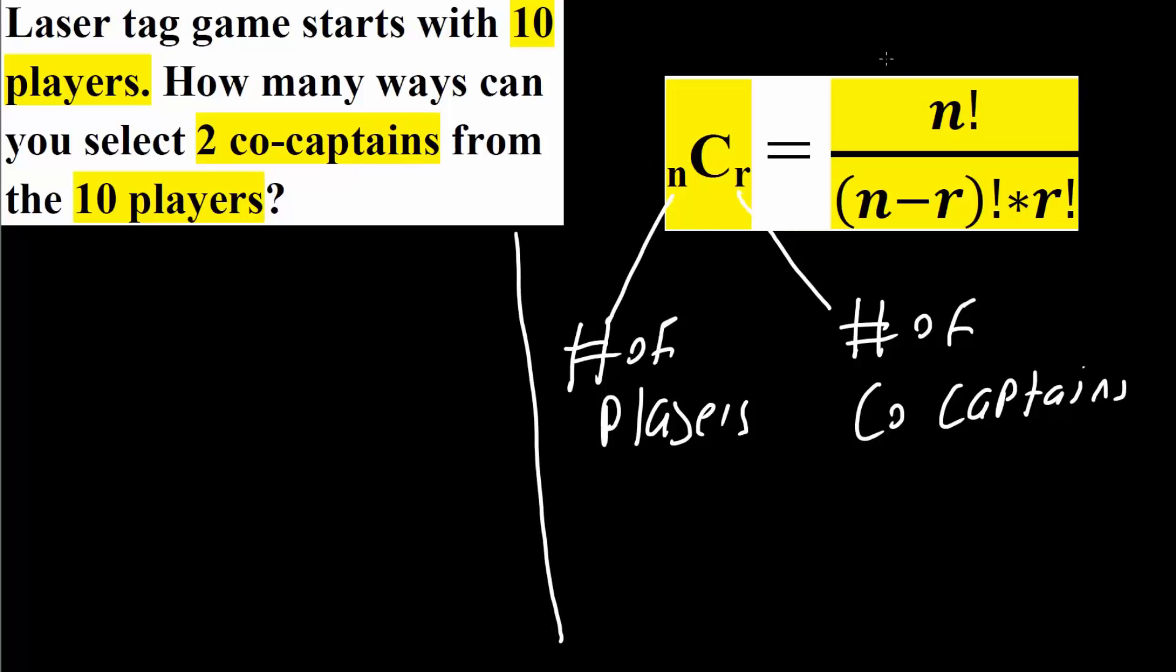So let's do that. n factorial - we're saying that we have 10 players, 10 objects. So 10 factorial divided by - we have 10 because n we said was 10, minus r.